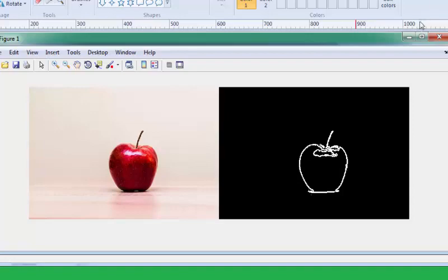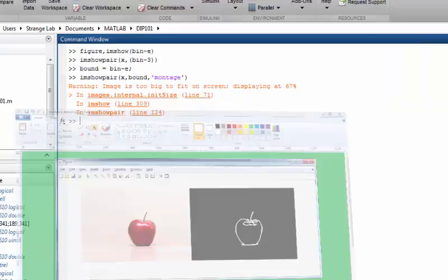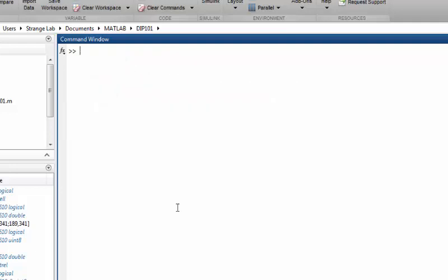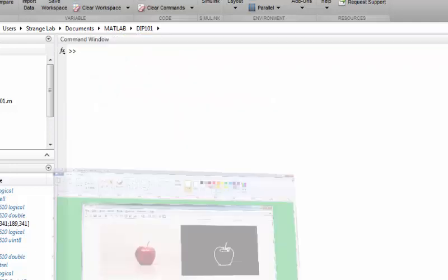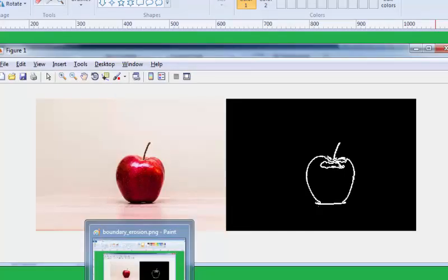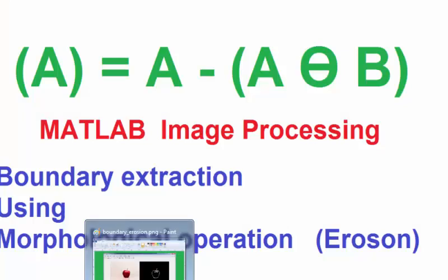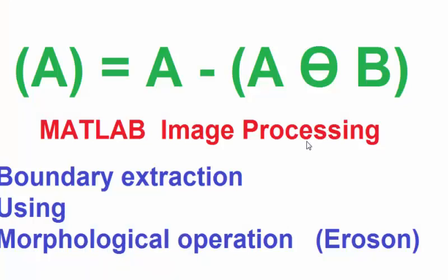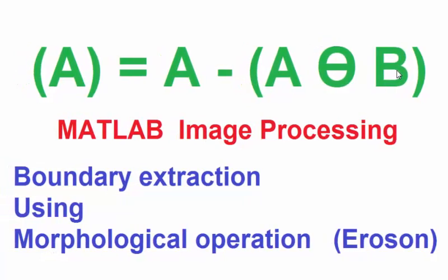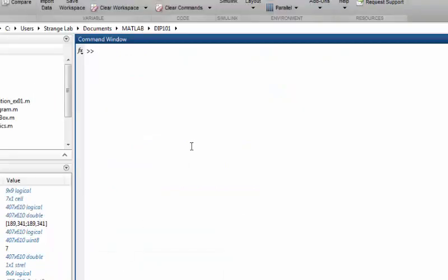Before getting started, let's understand the basic formula for extracting the boundaries of an image. The formula is A minus A eroded by B, where B is a structuring element — it could be a shape. This is a very basic morphological operation on which most other morphological operations are based.